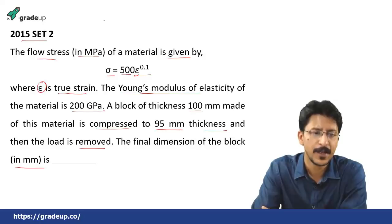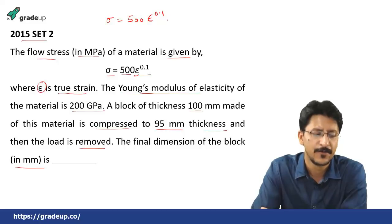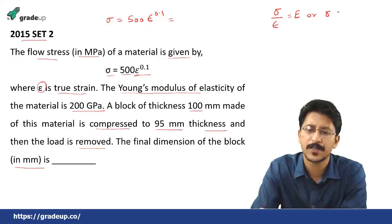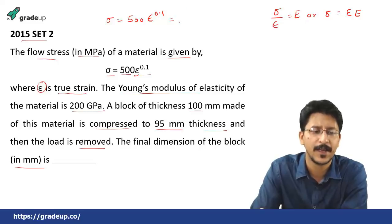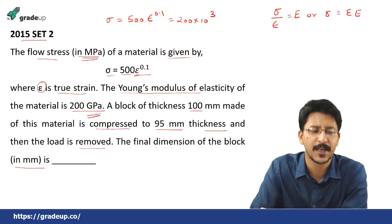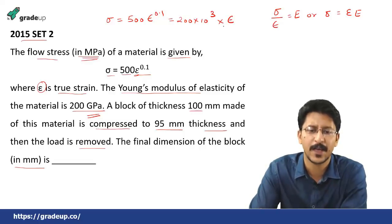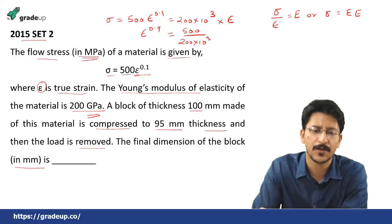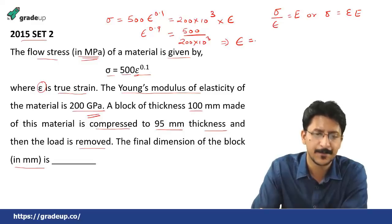We equate the given flow stress formula to Hooke's law. Sigma equals 500 into epsilon to the power 0.1, and by Hooke's law stress equals epsilon into E, where E is 200 into 10 to the power 3 megapascal. Equating these and keeping units consistent, we can find epsilon to the power 0.9 equals 500 divided by 200 into 10 to the power 3. Solving, we get epsilon equals 1.28467 into 10 to the power minus 3.